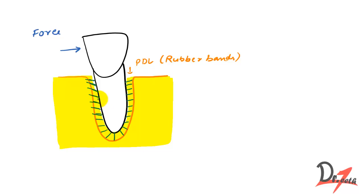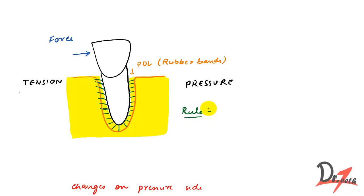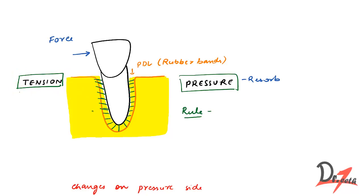So on the right side we have pressure, and on the left side we have tension. The rule is: bone subjected to pressure will resorb, and bone subjected to tension will form — meaning bone is deposited on the tension side and resolves on the pressure side.